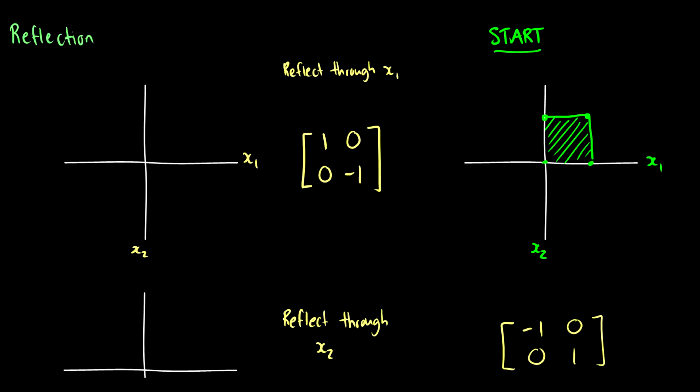So first of all, reflections. For the sake of this, our start position is always going to be a unit box that covers positive x1, positive x2. So it is this box right here.